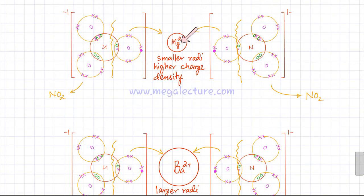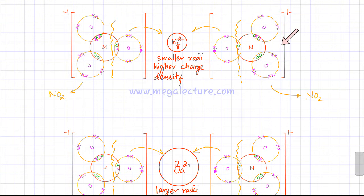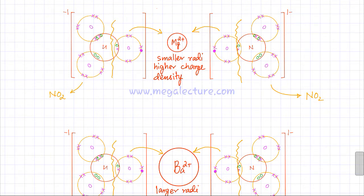Since Mg²⁺ has a higher charge density, it will have a stronger attraction for the electron density in the nitrate ion. The electrons in the nitrate are going to be pulled towards Mg²⁺ more strongly. So there is going to be more polarization of the nitrate ion in the case of magnesium nitrate.